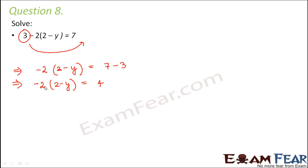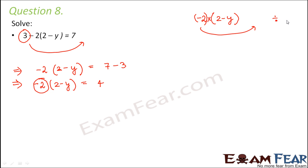Now, one very interesting thing to observe: the next term to shift is minus 2. This minus 2 is a number getting multiplied to (2 minus y). So when it shifts to the other side, it becomes divided by minus 2 — not plus 2. Whenever transposing happens, the operation reverses: addition becomes subtraction, and multiplication becomes division.